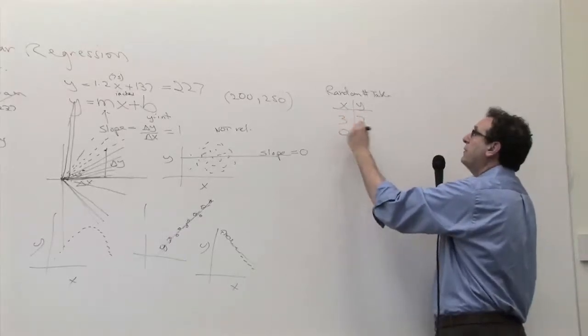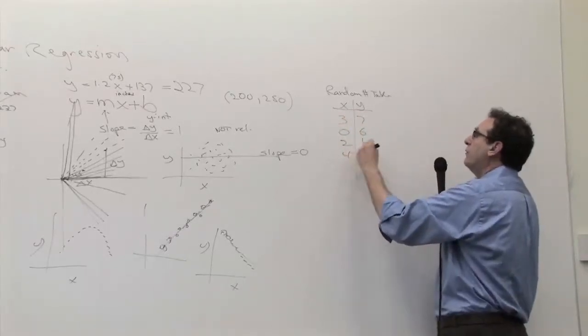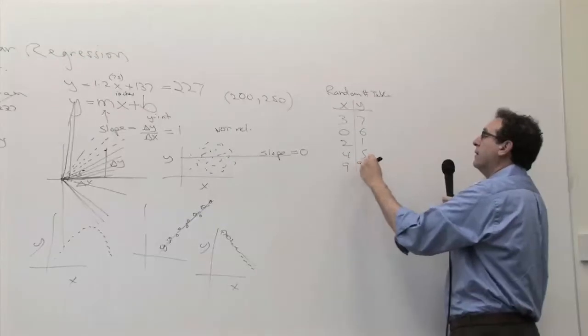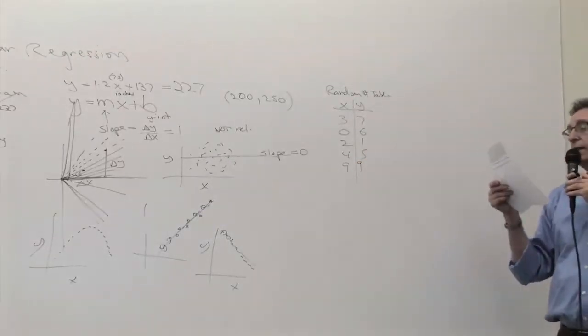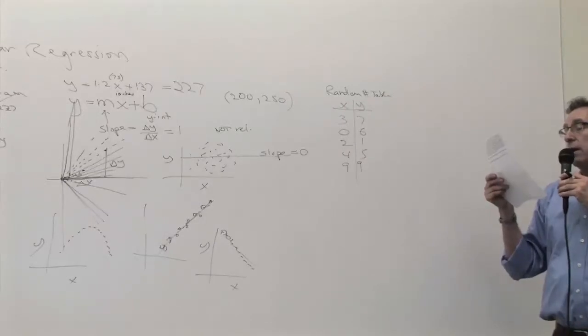3 and 7, 0 and 6, 2 and 1, 4 and 5, 9 and 9. OK, so these are the five pairs of numbers. You'll be doing also five pairs of numbers. You generate five pairs of numbers.